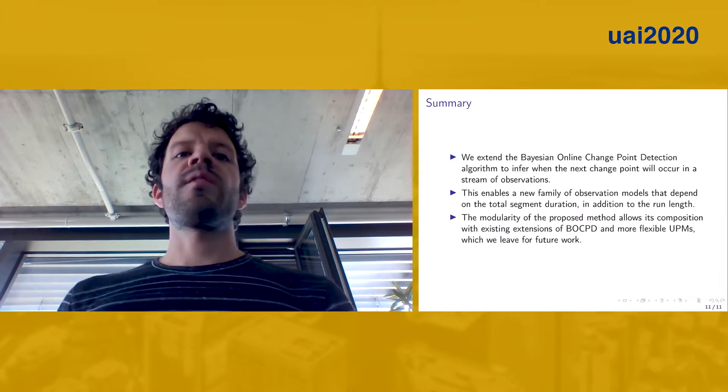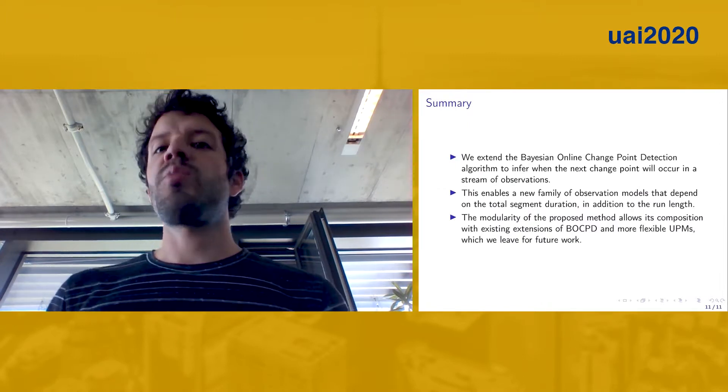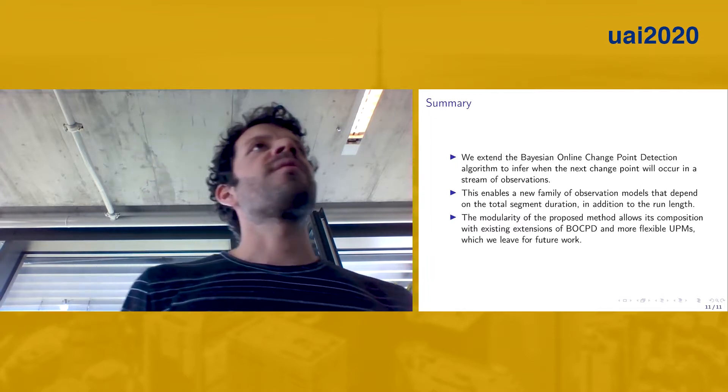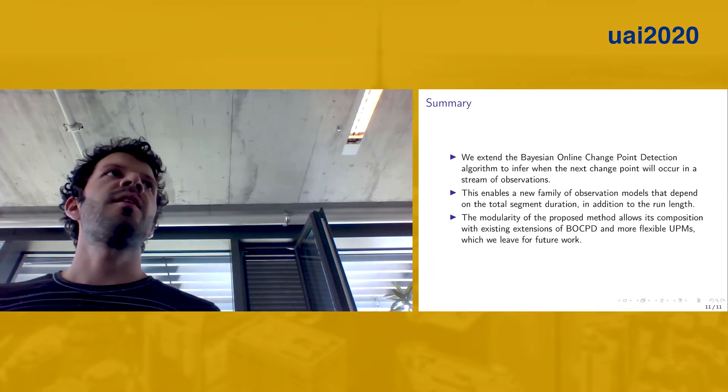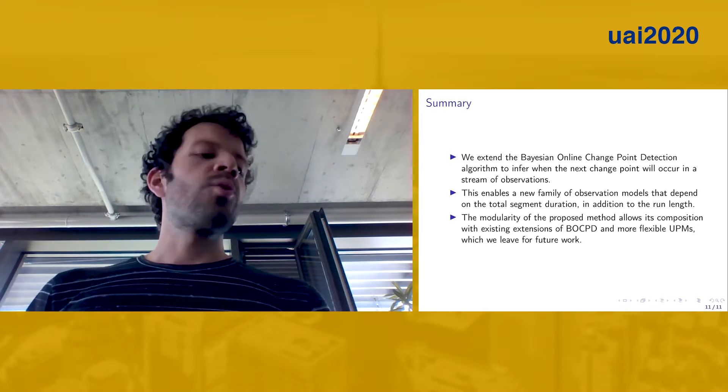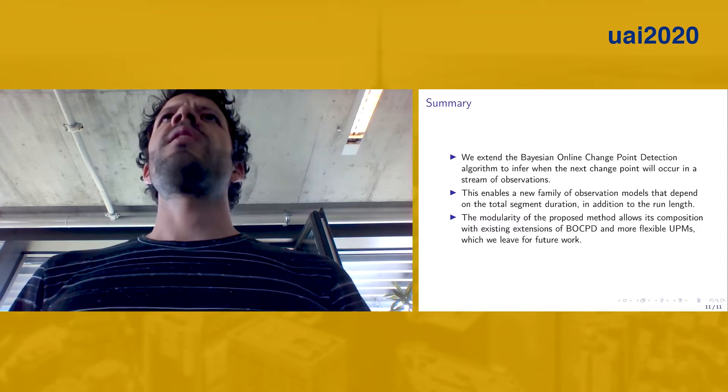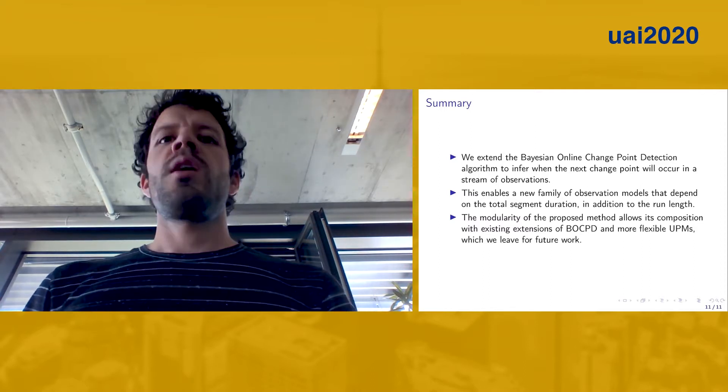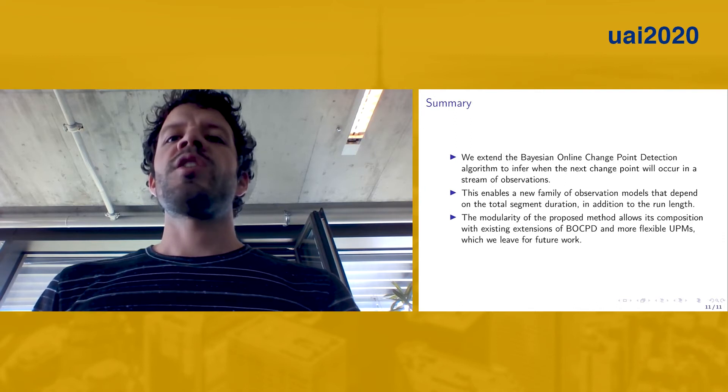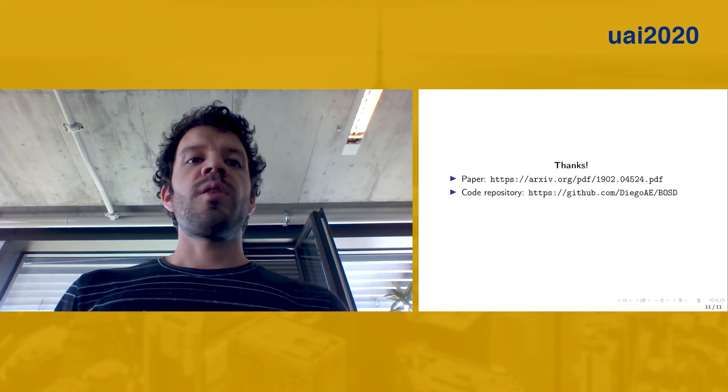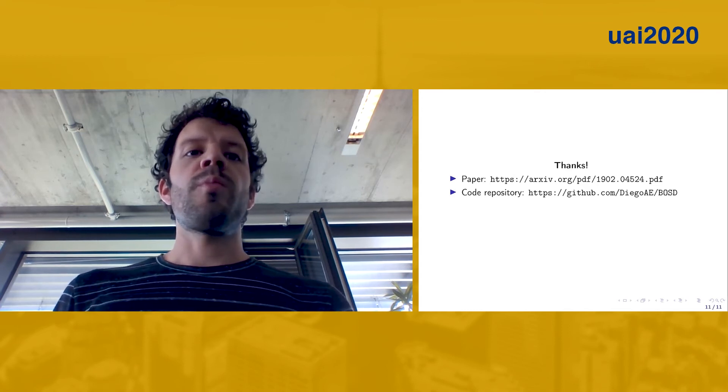In summary, we extend the Bayesian Online Change Point Detection algorithm to infer when the next change point will occur. We also show how this enables us to use observation models that take into account the total segment duration, and we would like to emphasize the fact that our model is highly modular and composable and can be integrated with existing extensions to the original Bayesian Online Change Point Detection algorithm. We would like to thank you for your attention, and we welcome you to check our paper and code. Thanks a lot.